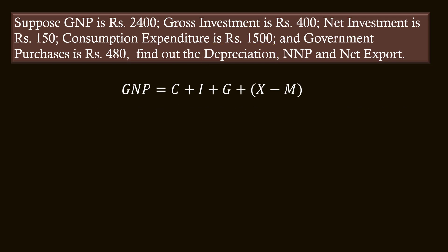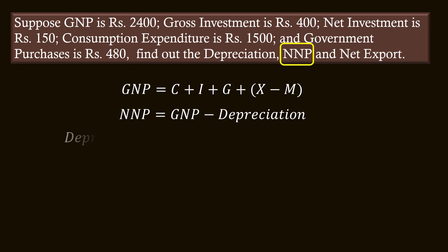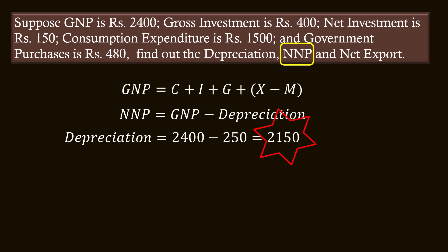The next value to calculate is Net National Product. NNP = GNP minus Depreciation. Substituting the values: NNP = 2400 minus 250 = 2150 rupees.